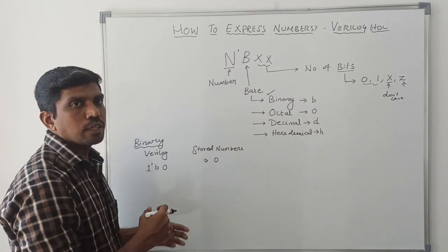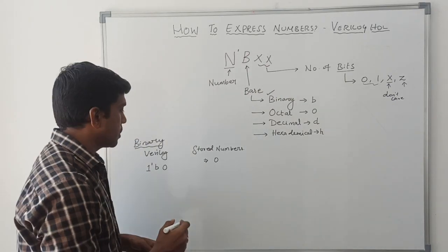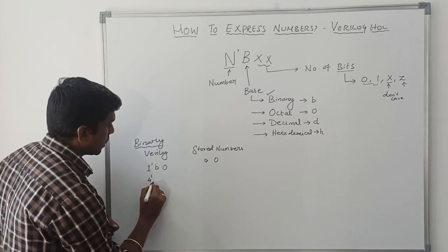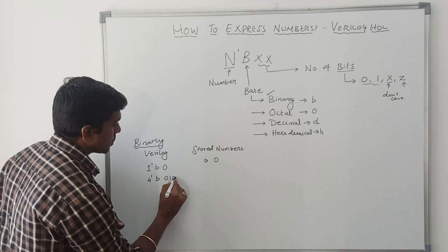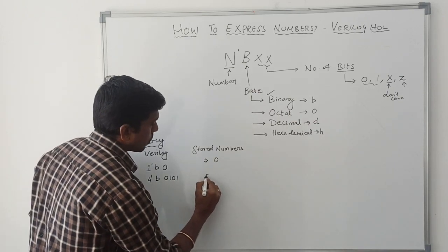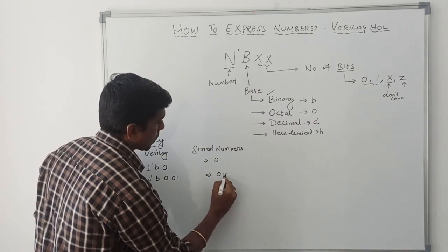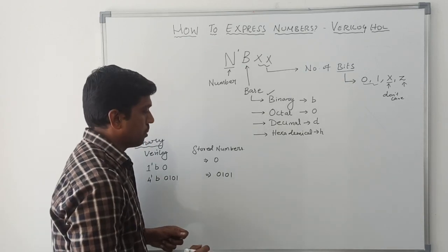Suppose I need to represent the 4 bit values in binary. 4 tick B 0101. The stored number is 0101. It's a stored number.